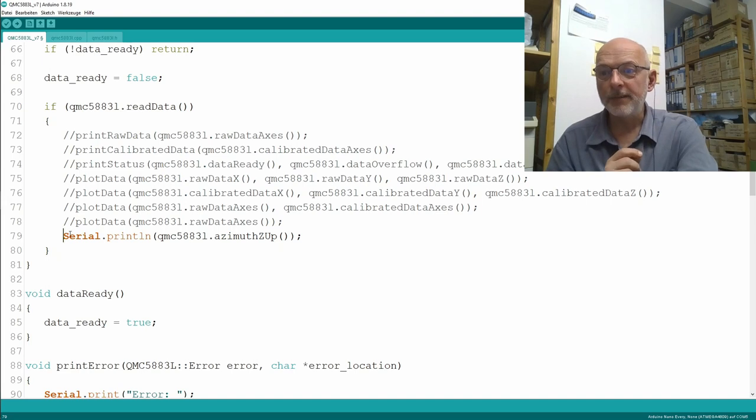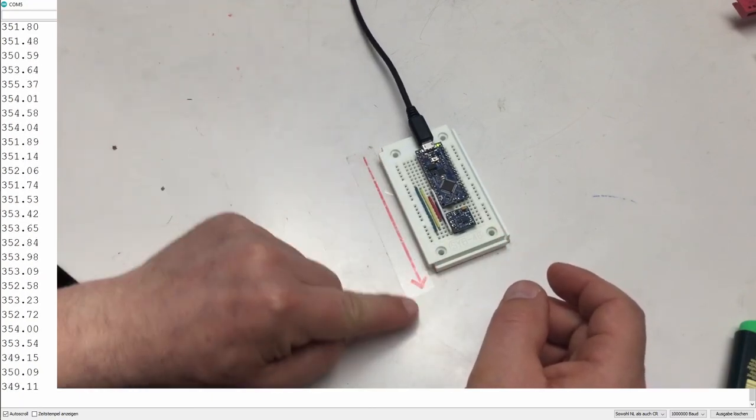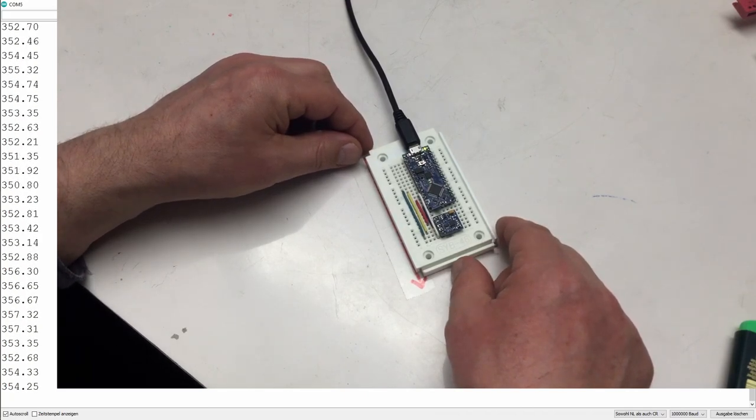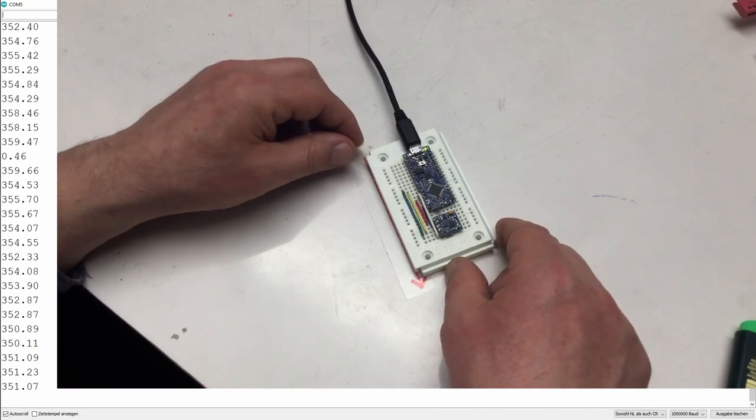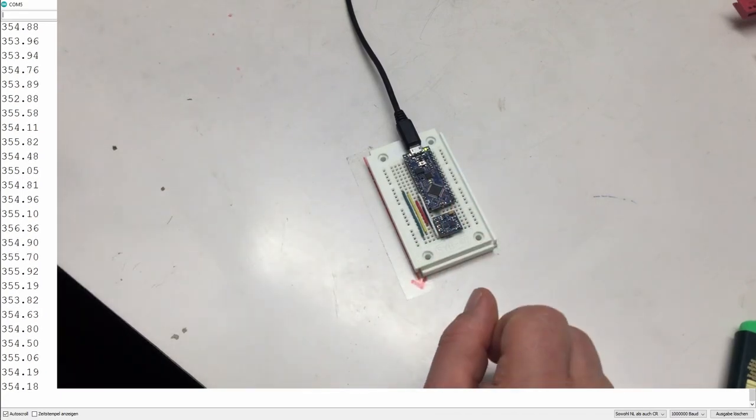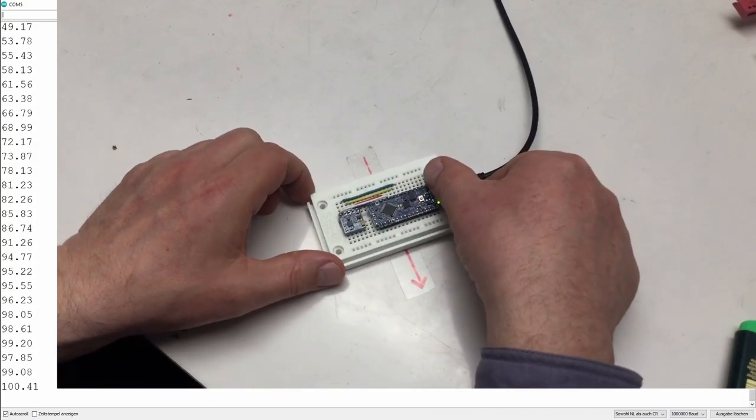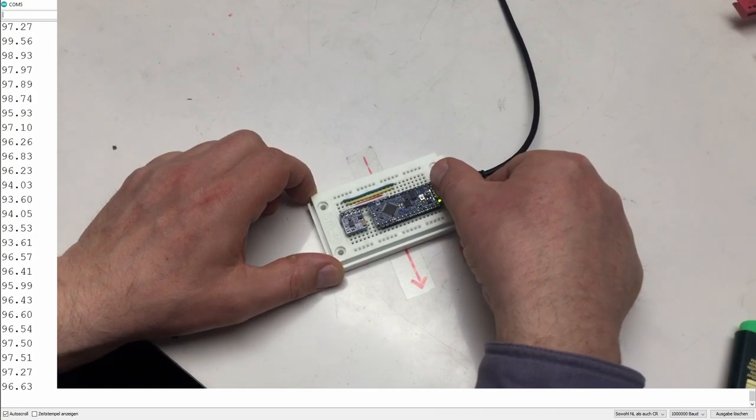But now let's have a look at the azimuth we can calculate from that. I still have from the last video my north here. And if we align our board, we are at 356, 355. So five degrees off, maybe a little bit less. But that was the same result with the faked calibration last time, and this calibration works in 3D.